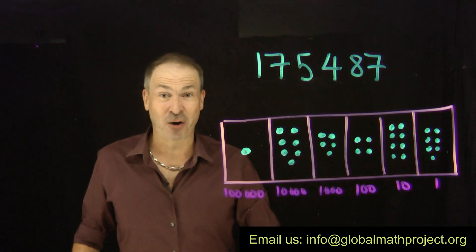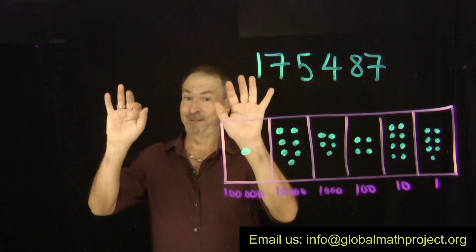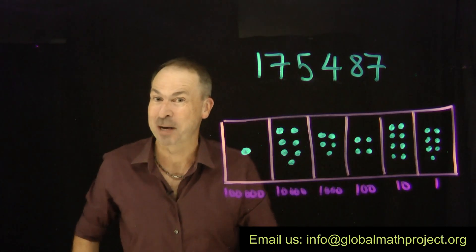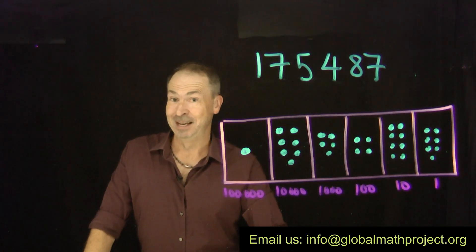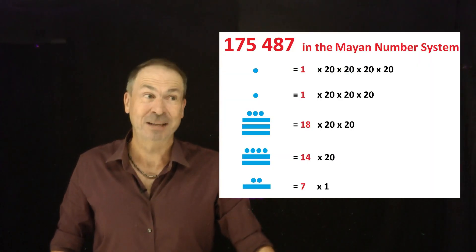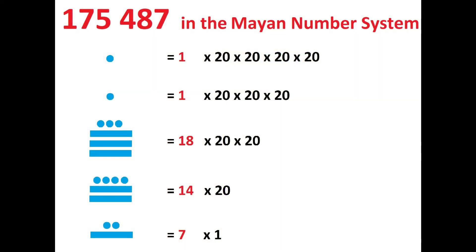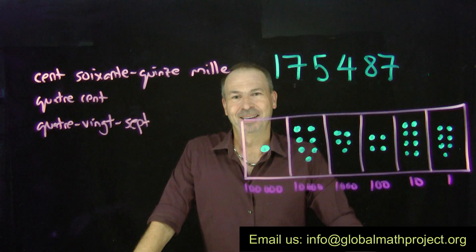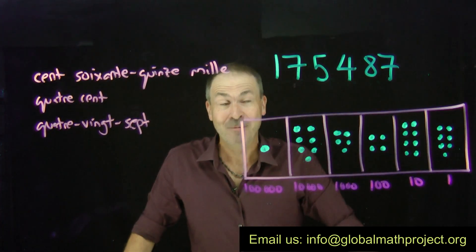Not all cultures on earth work with a base 10 number system. Some cultures thought about using fingers and toes and went base 20 instead. The Mayans from 2000 years ago did this. Can you see how this represents our number 175487 in Mayan? And there are vestiges of base 20 in many languages currently spoken to this day.